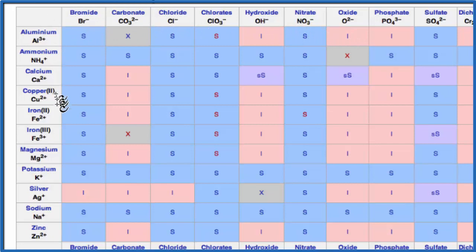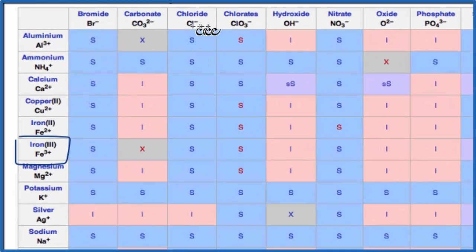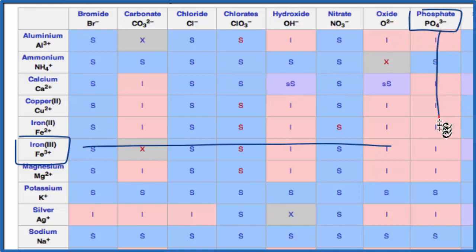We're looking for iron-3 right there, Fe3+, and then the phosphate is PO4-3-, so we go over and down. And that I means that iron-3-phosphate is going to be insoluble in water.